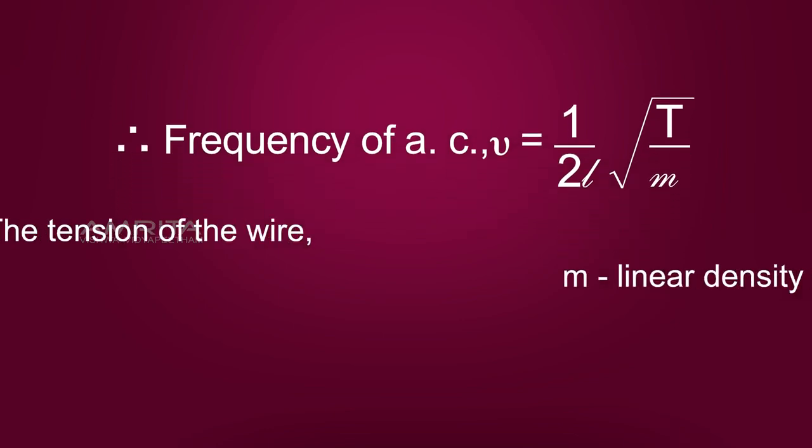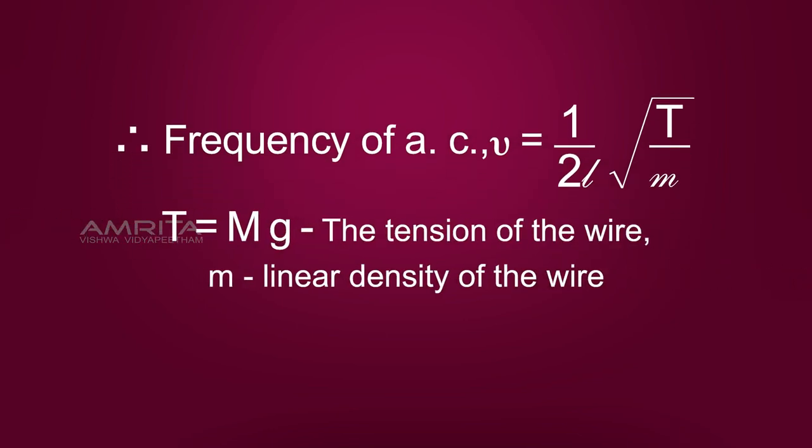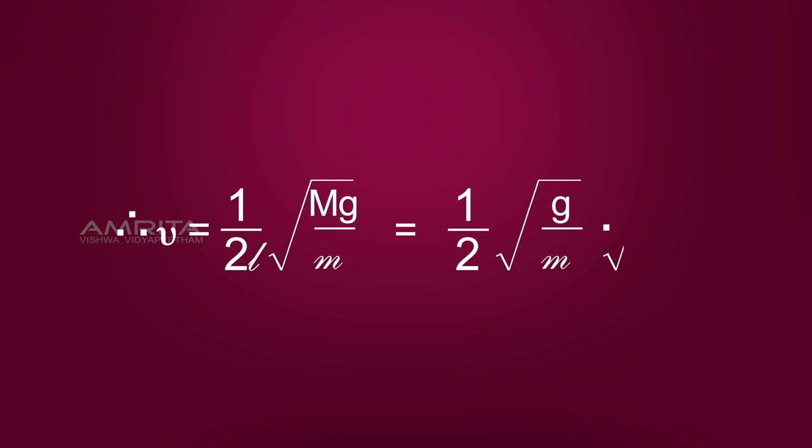Where T is equal to Mg, the tension of the wire and M is the linear density of the wire. Therefore, ν is equal to 1 by 2L into root of Mg by M, that is equal to 1 by 2 into root of g by M into root of M by L square. M by L square is a constant.